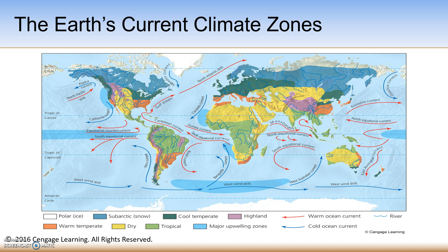Mountains interrupt the flow of prevailing surface winds and the movement of storms. High mountains can create a rain shadow effect, which occurs along the western coast near California with the Sierra Nevada Mountains, as well as along the western coast of South America with the Andes Mountains. Cities with lots of bricks, asphalt, and traffic can create distinct microclimates, which are typically warmer in temperature than surrounding rural areas. This map depicts cool temperate areas, tropical areas, and dry areas based on color shading.